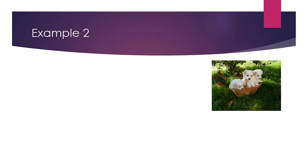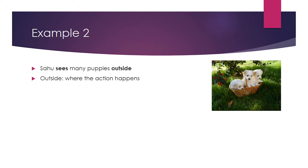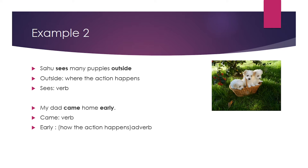Let's move to the second example: Sahu sees many puppies outside. Sahu sees where? Outside — that tells us where the action happens; sees is the verb. Another example: My dad came home early. Here came is the verb and early is the adverb, telling us when.